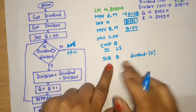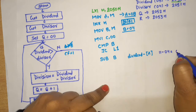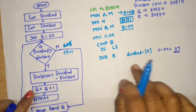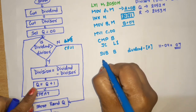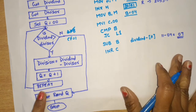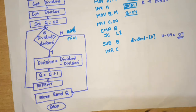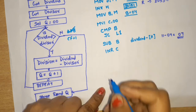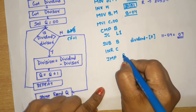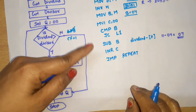When subtraction is possible, the quotient is incremented: write INR C — since C holds the quotient. Then, write JMP to the comparison label (L2/repeat) — this is an unconditional jump back to the CMP step, so the process repeats. The repeat goes back to CMP and does the same process again.